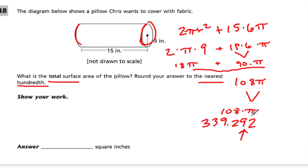It goes tenths, hundredths, thousandths. We use the smaller place next to it, which happens to be 2 in this case. So we leave the 9 where it is. So our answer is 339.29 square inches.